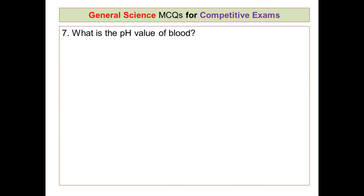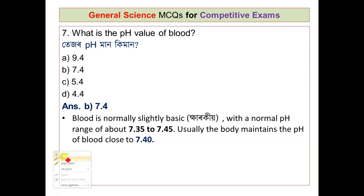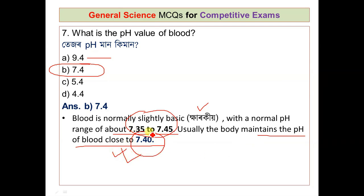Question number 7: what is the pH value of blood? The pH value of blood is normally slightly basic. A normal pH ranges from about 7.35 to 7.45. The body typically maintains the pH of blood close to 7.4.